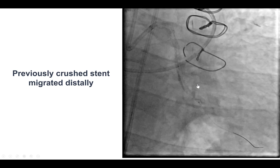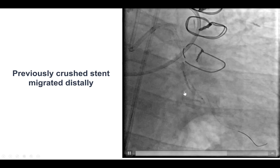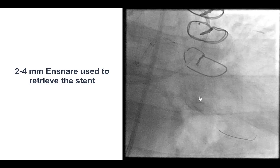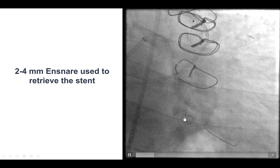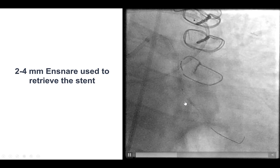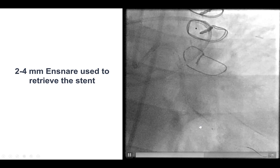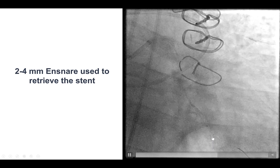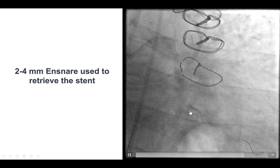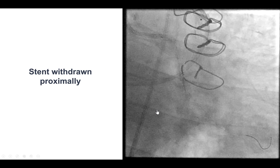However, when we were about ready to finish the case, we noticed that the previously crushed stent had migrated from the proximal circumflex down towards the area of the vein graft touchdown. Because that area was not perfectly expanded, we decided to attempt retrieval, and this time we did use a snare. That was a 2 by 4 millimeter snare that was moved up past the stent, then pulled back, and the snare actually did capture the stent. We were able to bring it back a little bit, but we did have a lot of resistance.